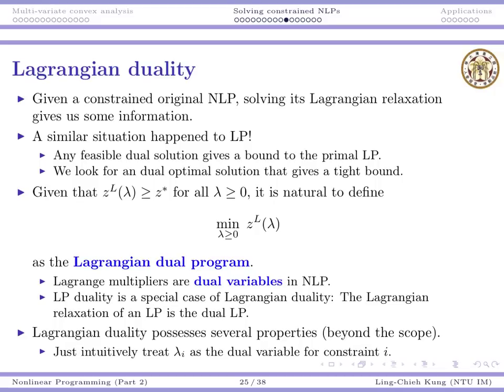Actually, they all, these can all be replicated to nonlinear programs. So Lagrangian multipliers, keep in mind, they are just dual variables. Moreover, we can actually show you that LP duality is a special case of Lagrangian duality.